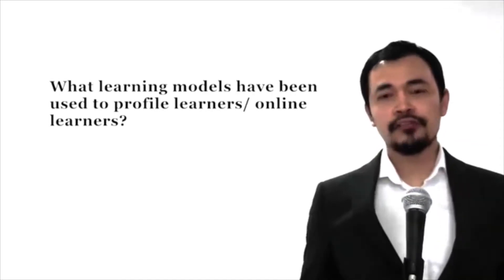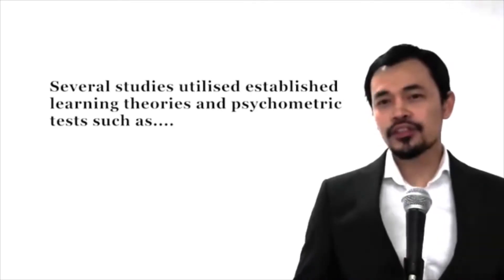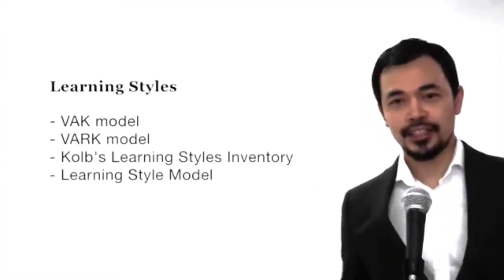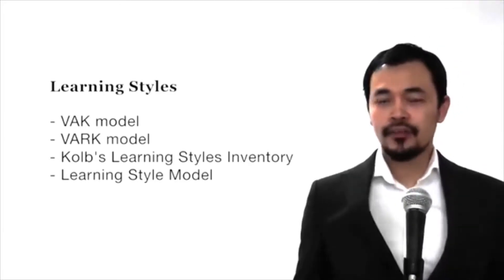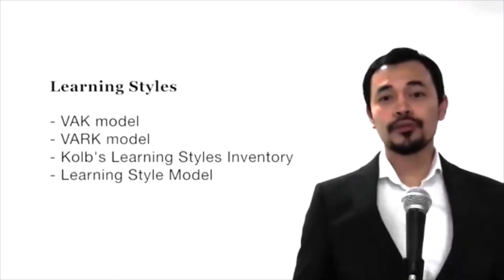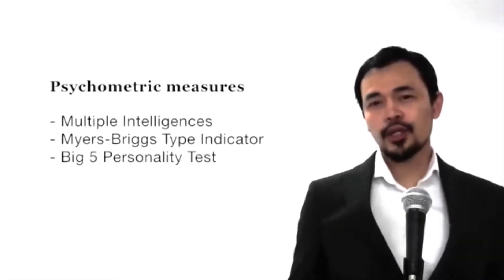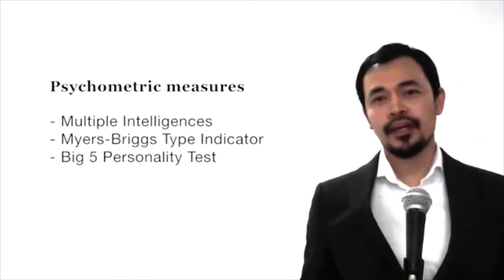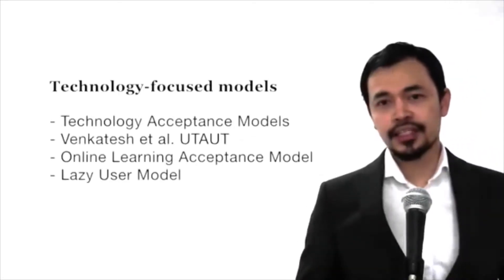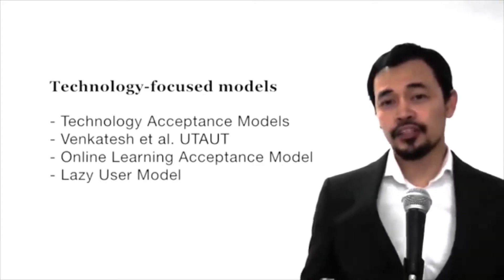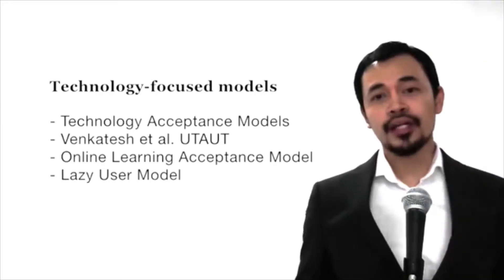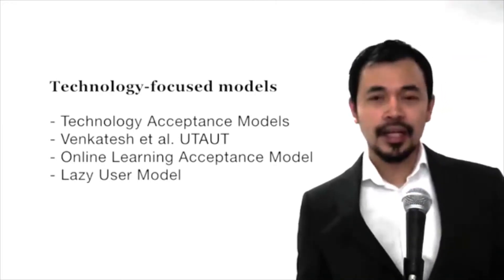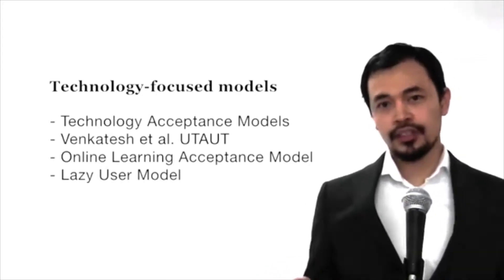What learning models have been used in the past to profile online learners? Several studies employed specific learning theories and psychometric tests, such as learning styles — including the VAK model, the VARK model, and Kolb's learning inventory — as well as psychometric instruments such as multiple intelligences, the Myers-Briggs Type Indicator, and the Big Five personality tests. There are also more technology-focused models, such as Venkatesh's Unified Theory of Acceptance and Use of Technology, the Online Learning Acceptance Model, and the lazy user model, which is based on using whichever technology is easiest and most convenient.